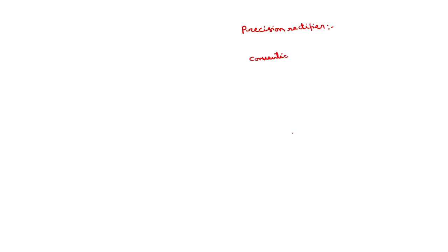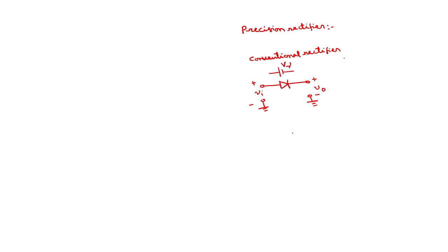You might have studied this conventional rectifier in your second year. If I take the conventional rectifier, we have a single diode. This is input with respect to ground, this is output with respect to ground. If I assume that the cut-in voltage or knee voltage of this diode is V gamma, this V gamma is equal to 0.7 volts for silicon and 0.3 volts for germanium. What will be the operation of this conventional rectifier and what are its limitations? Why do you have to go for the precision rectifier?